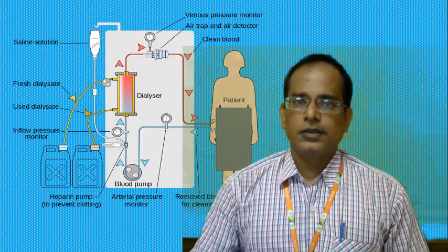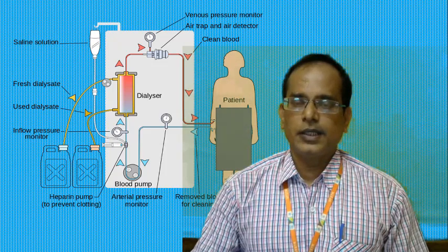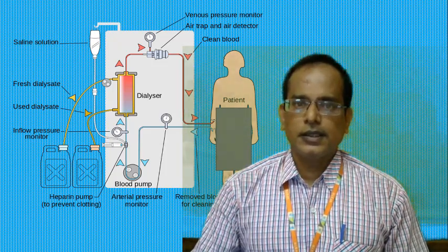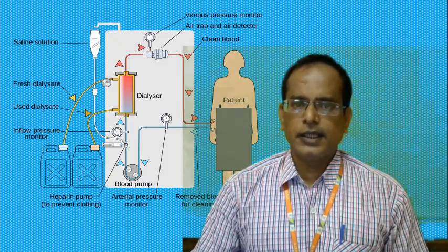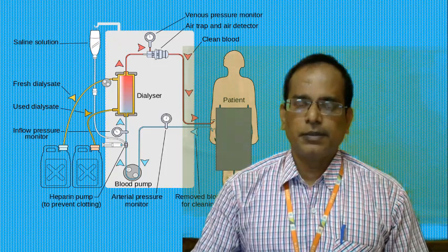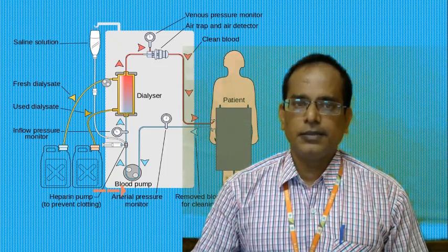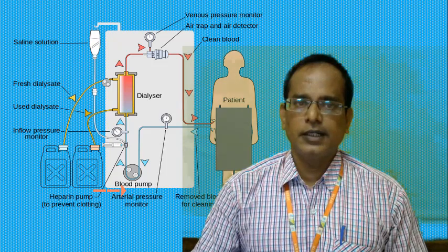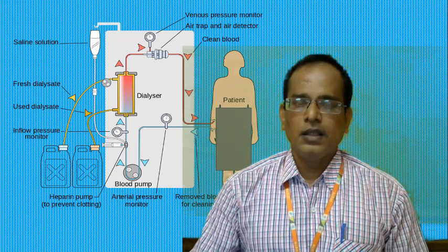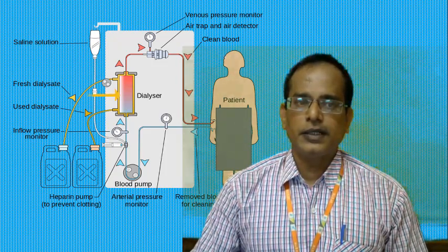Here you are seeing a hemodialyser. Unclean blood is taken from an artery and given to a peristaltic blood pump, which pumps this unclean blood to the dialyser.